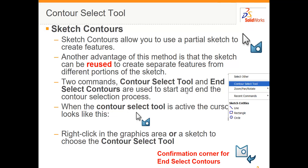The contour select tool may need to be turned on. When it's active, this symbol will appear in your sketch and on your design tree. To activate the contour select tool, just right click in the graphics area on a sketch and choose contour select tool.